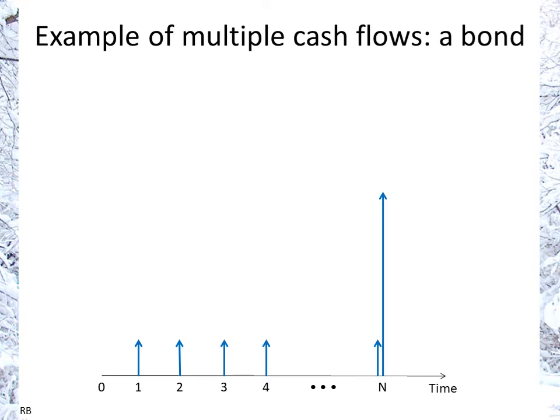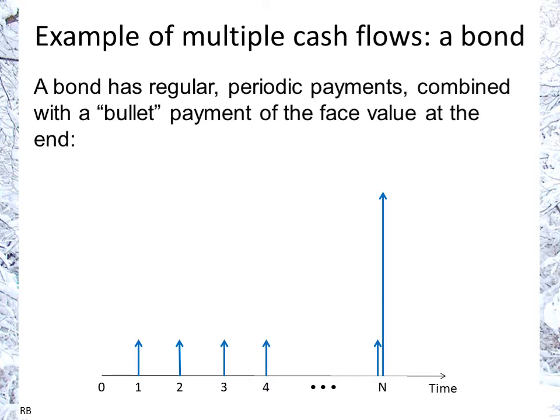What's different about a bond — this is a typical timeline of cash flows. You have payments from periods 1 to n, n being the total number of payments, and at the end you get your face value or par value of the bond. So it has regular periodic payments combined with a bullet payment.